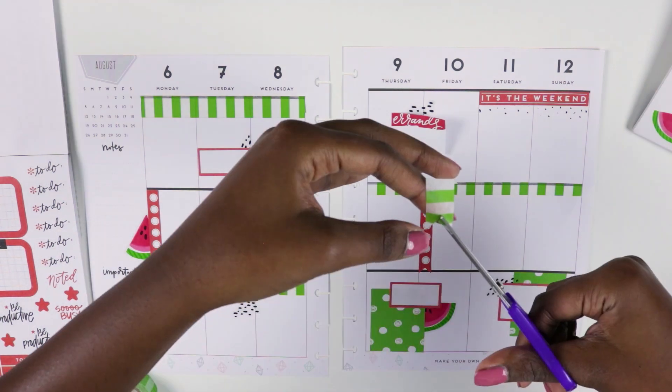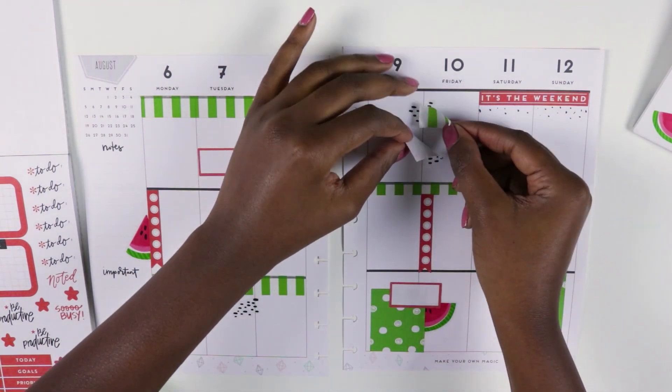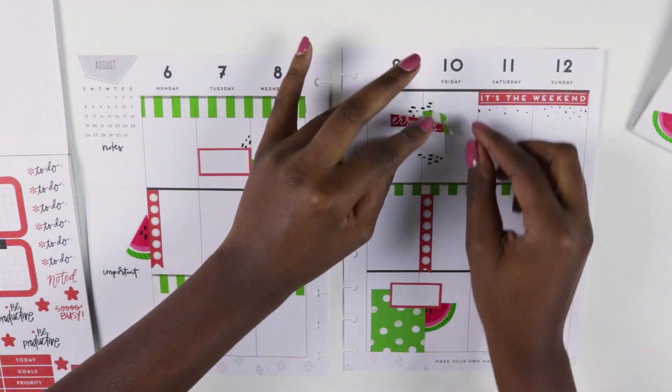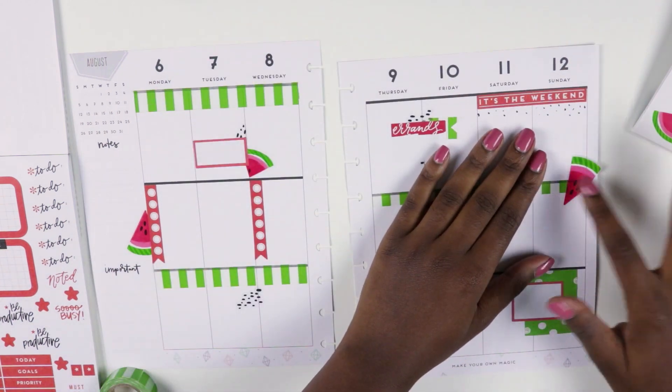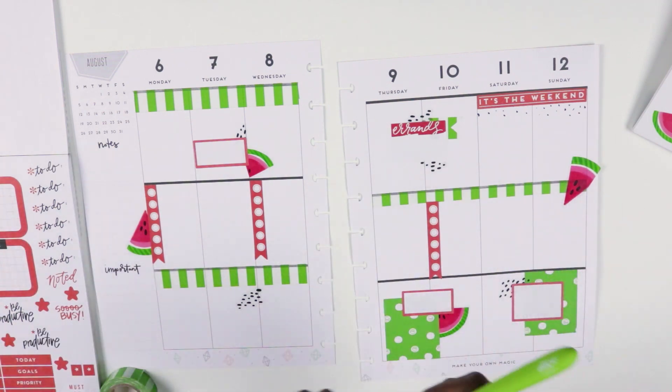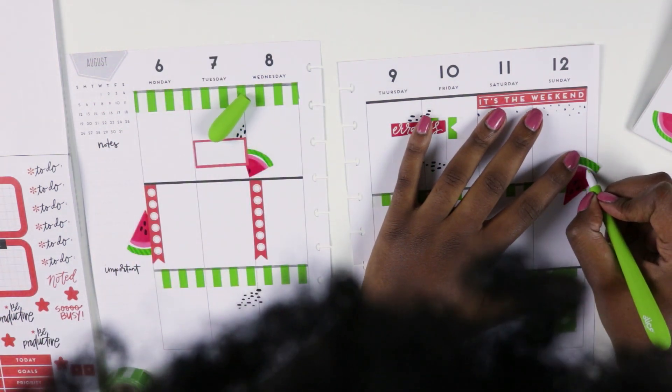And then adding another watermelon because what's a watermelon spread without any watermelons? A trick I like to do is cut them so it looks like they're coming out of the boxes. I feel like this adds some dimension to the spread and I love to do that with circle quote stickers or sometimes the colorful boxes.